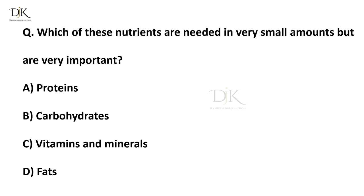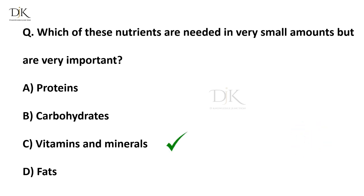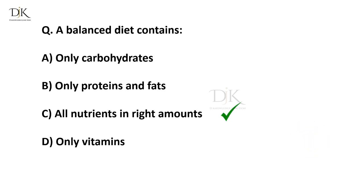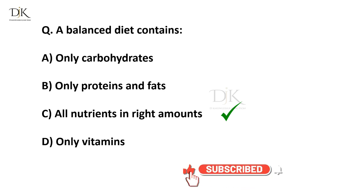Which of these nutrients are needed in very small amounts but are very important? Right answer is vitamins and minerals. A balanced diet contains right answer is all nutrients in right amounts. Keep learning, keep growing — see you in the next video.